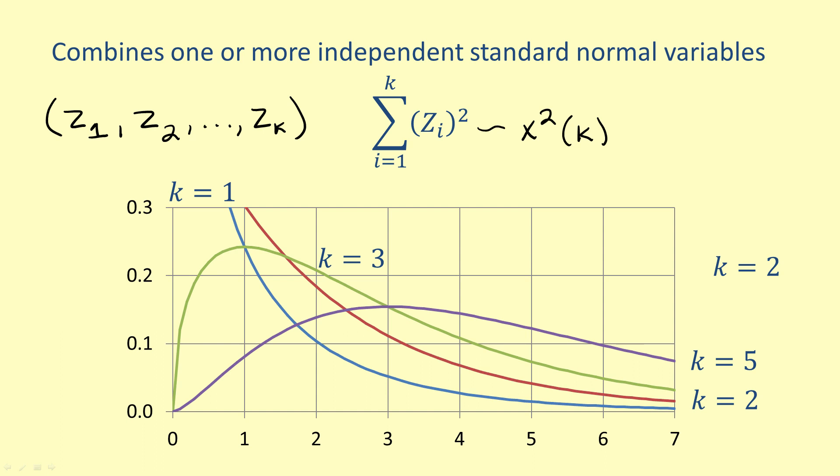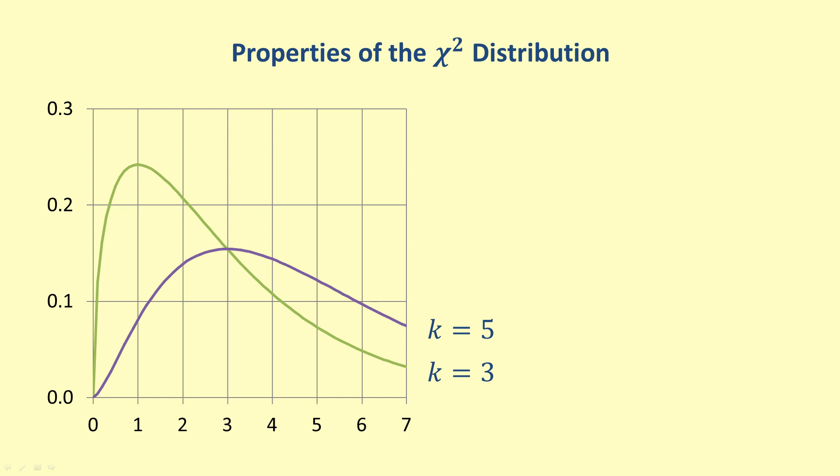Since the chi-square distribution is a probability distribution, the total area under the curve is equal to one. Now let's discuss some of the properties of these distributions. Since they are probability distributions, the total area under each chi-square distribution is one.